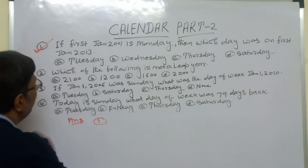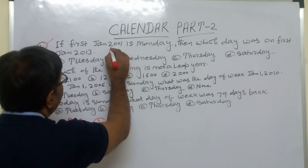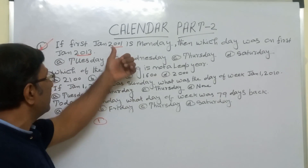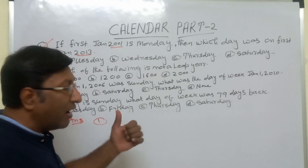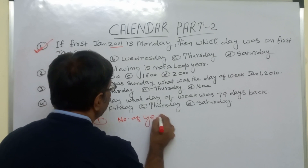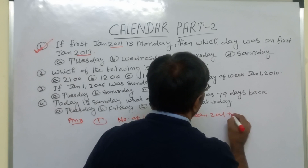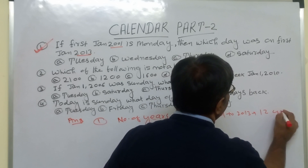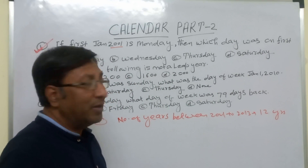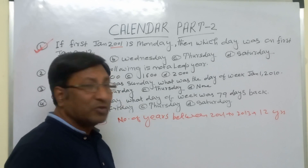The first question is: if January 1, 2001 is Monday, then which day was it on January 1, 2013? You can see that the date and month are the same — only the year differs: 2001 and 2013. So we have to find the number of odd days between 2001 and 2013. First, find how many years — that is 12 years. Now, in 12 years, how many leap years and how many normal years? We have already explained what a leap year is: the year divisible by 4 is called a leap year.